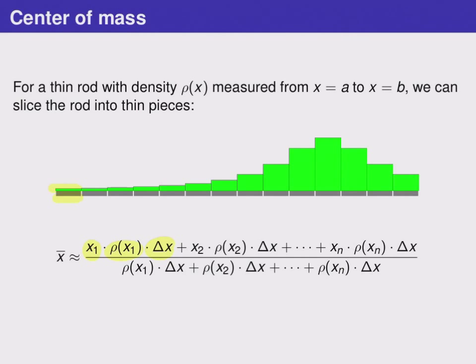And delta x represents the volume. So we're really multiplying density times volume, and that gives us mass, and then we're multiplying it by its location, the x1. So this formula on top is adding up masses times locations, just like our previous formula did.